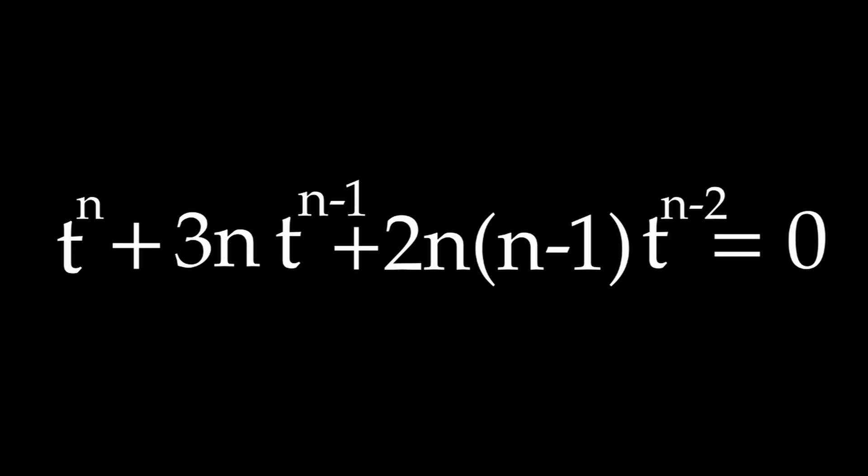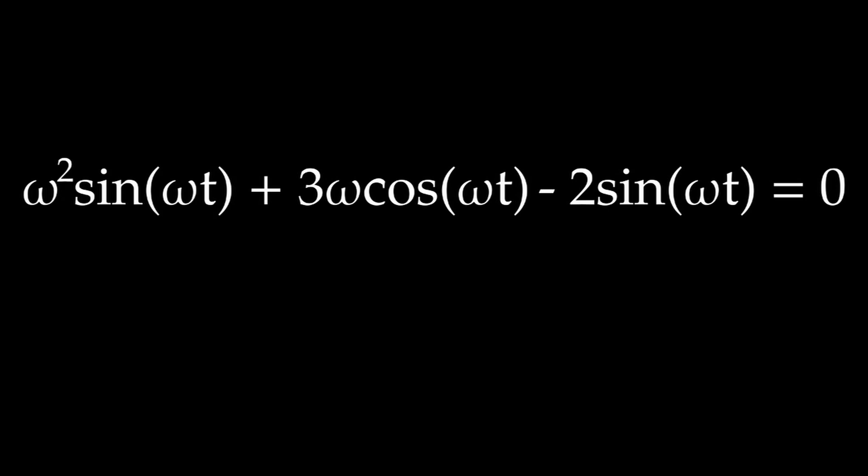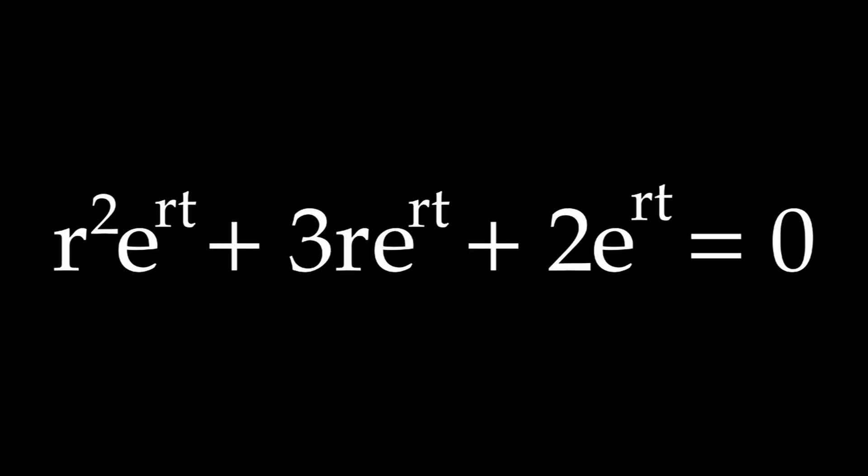Monomials wouldn't work, because the highest order term would always stay in there. Sinusoids wouldn't work either, because either cosine or sine would stay in there. But exponentials would work, because all of the terms would have the same form.